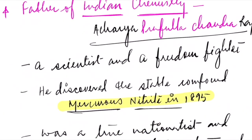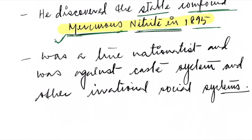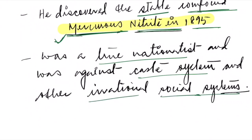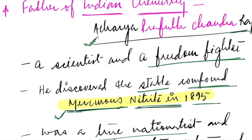The last topic: the Father of Indian Chemistry is Acharya Prafulla Chandra Ray. He was also a freedom fighter who discovered a stable compound, mercurous nitrite, in 1895. He was a true nationalist, opposed to the caste system and other irrational social systems. He was in the news recently, so if a question asks who the Father of Indian Chemistry is, the answer is Acharya Prafulla Chandra Ray. Thanks for watching.